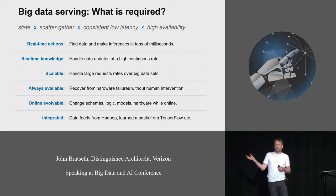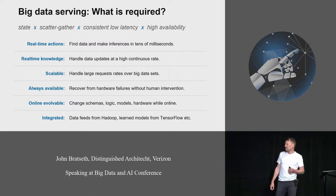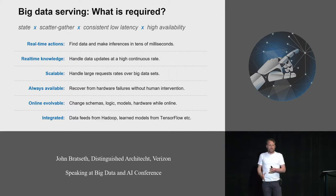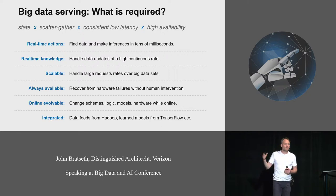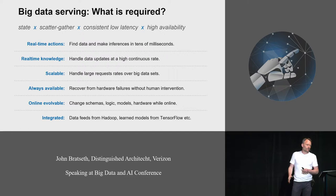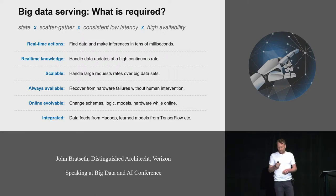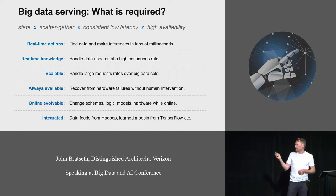High availability also translates to being able to evolve the system — the data schemas, the logic, the models, even the hardware you run on — while you are serving and handling writes to your data at the same time. And because this is just the inference serving part of a big data stack, you also need to integrate with the other parts, like Hadoop for offline machine learning, and machine learning tools like TensorFlow for actually producing the models.